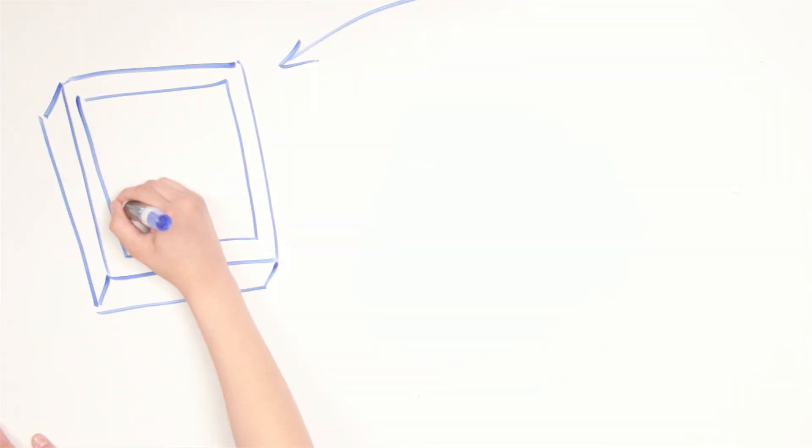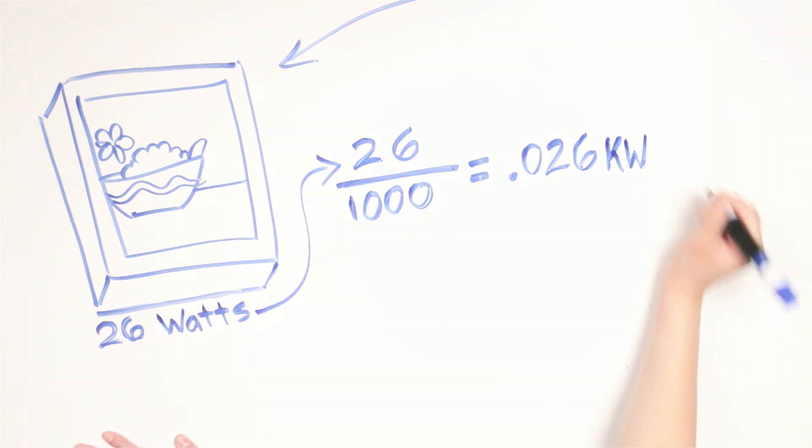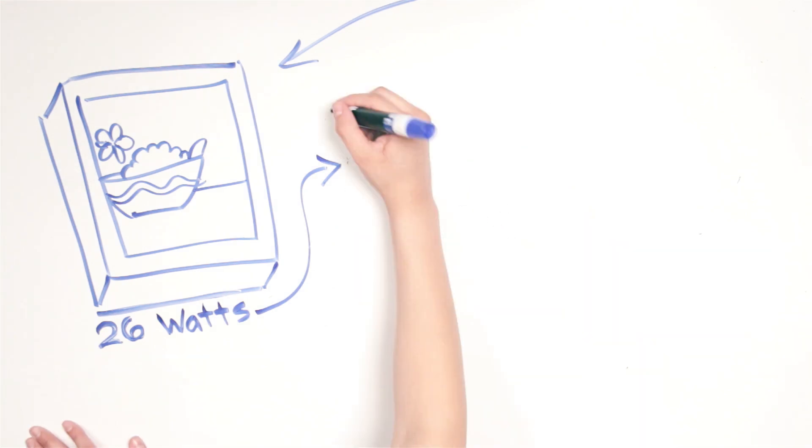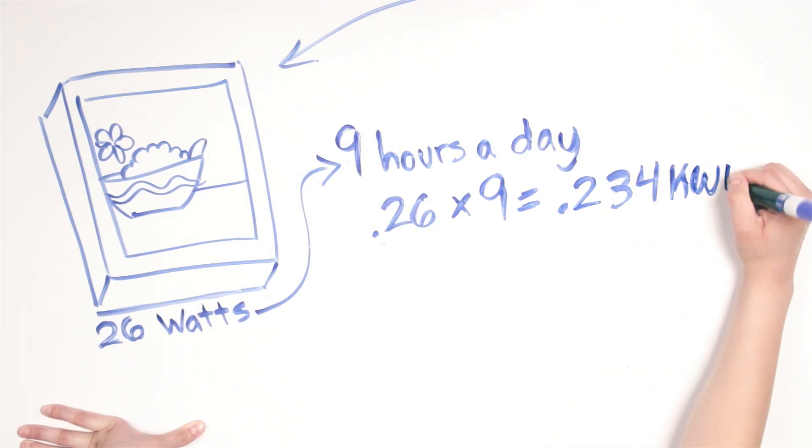Here's an example. Suppose your lightbox rating is 26 watts. That would be 26 divided by 1,000 equaling .026 kilowatts. And suppose you'll power the lightbox nine hours a day. That's .026 times 9, equaling .234 kilowatt hours.